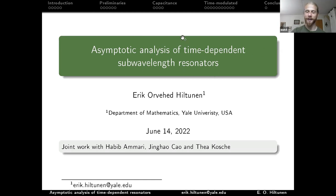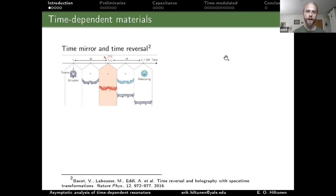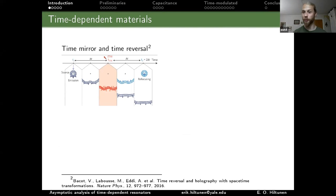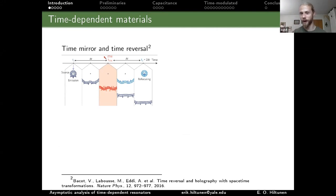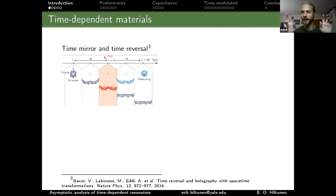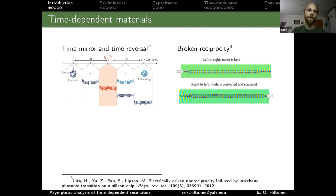We are interested in materials whose parameters depend on time. Looking at the wave equation, there is a kind of duality between space and time dimensions — in one dimension, the two are equivalent. Phenomena that arise from spatially varying material parameters can have analogues when parameters depend on time. The most intuitive example is an interface: just as a spatial interface gives reflection, a temporal interface — where parameters suddenly change — can give a time-reflected wave.